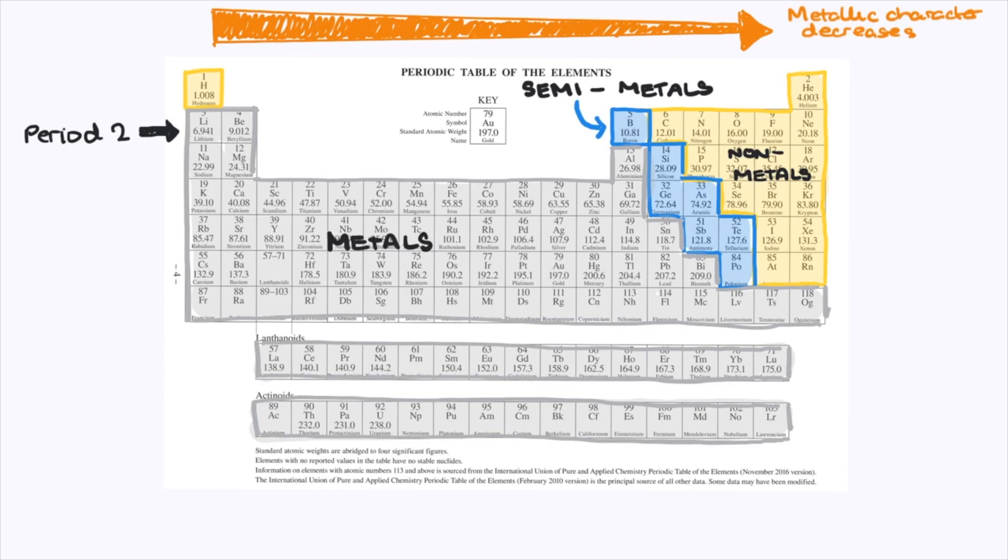Similar trends can be seen when moving down a group. For example, in group 14, carbon is a non-metal, silicon and germanium are semi-metals, while the rest are metals. So metallic character increases down a group. Now one of